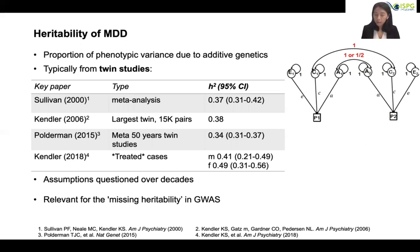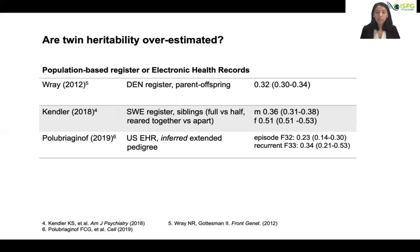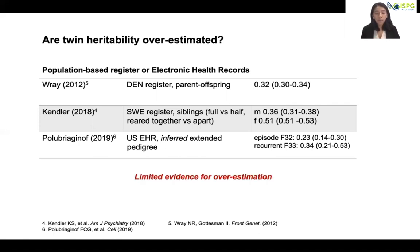What are other lines of evidence? There is a growing literature of heritability estimation based on population-based register or electronic health record data. These studies reconstruct extended pedigrees based on either recorded or inferred familial relationships. The estimates here are fairly similar to those from twin studies, so there seems to be very limited evidence for overestimation.